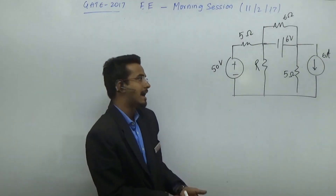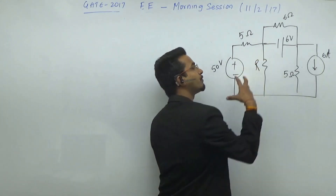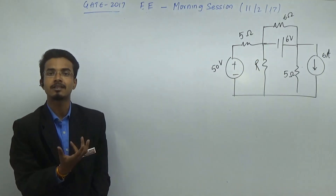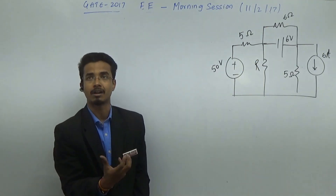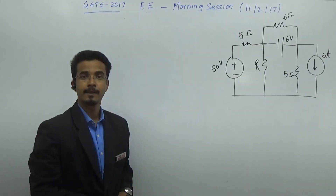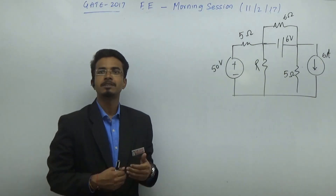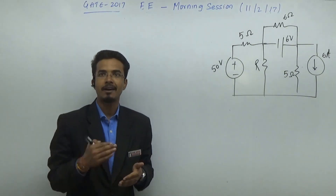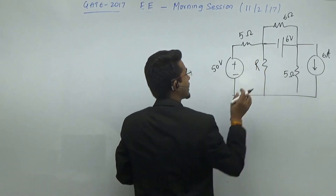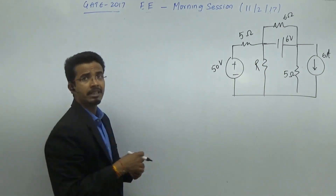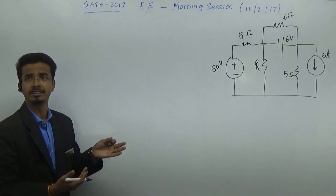For that, you have to calculate the value of the resistance for which you will get the maximum power at R. Firstly we will calculate the Thevenin equivalent, then only you can proceed with this.